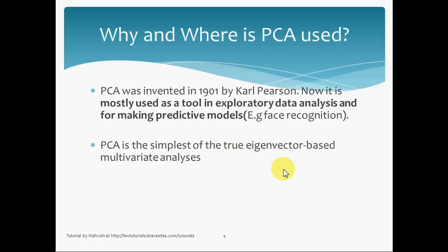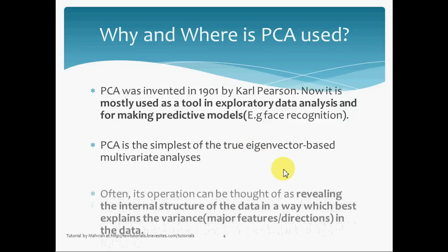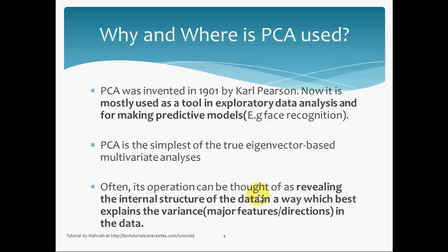It is the simplest of the true eigenvector-based multivariate analysis, and often its operation can be thought of as revealing the internal structure of the data in a way which best explains the variance in the data. By variance, we could mean the major features of the data set or the directions in a data set. We will have a detailed look at this property, taking both the PCA technique itself and its relation to recognizing a face in parallel.